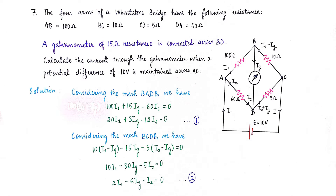Hello students. In today's lecture we will be solving example number 7 from our chapter. This example is based on the application of the Wheatstone bridge. The four arms have the following resistances: arm AB = 100 ohms, BC = 10 ohms, CD = 5 ohms, and DA = 60 ohms. A galvanometer having resistance of 15 ohms is connected across the diagonal BD.